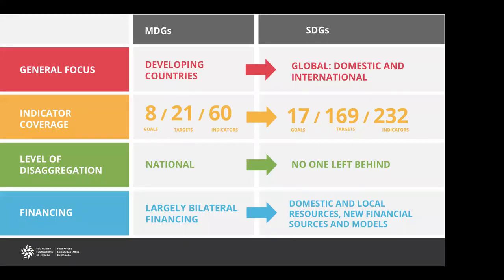To illustrate how different the SDGs are, let's look at their predecessor, the Millennium Development Goals, and four key ways the SDGs are fundamentally different. First, with respect to focus: the Millennium Development Goals focused largely on developing countries. The SDGs are really as much a domestic and community agenda as they are an international agenda — what happens in Dartmouth matters as much as what happens in Dakar. They're also a much more robust framework that recognizes the complexity and interconnectivity of many issues. The Millennium Development Goals had 8 goals, 21 targets and 60 indicators. The SDGs have 17 goals, 169 targets and 232 indicators.